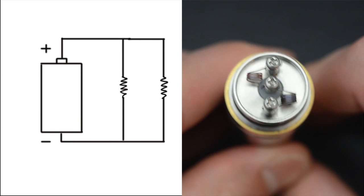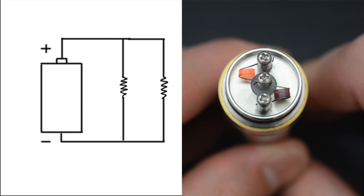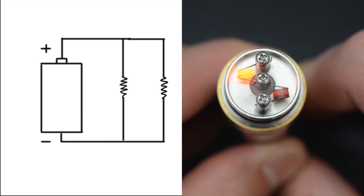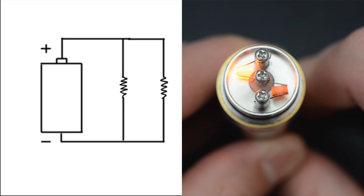For dual coil to work properly, the resistance of each coil has to be roughly the same. Otherwise, the current does not split evenly, so the coils don't fire evenly.